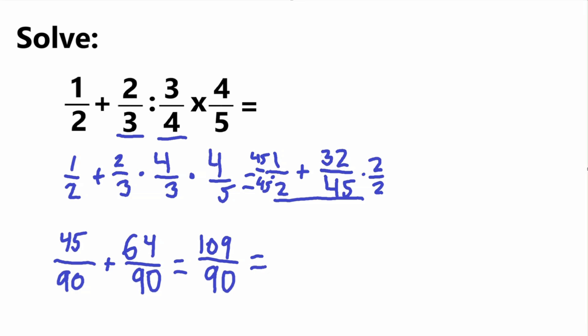And if we want to write that as a mixed number, we will have, so 90 over 90 is equal to 1, right? So this is equal to 1, and then when we take away 90 from this 109, we have 19 left. So our final answer would be, in mixed number form, 1 and 19 over 90.